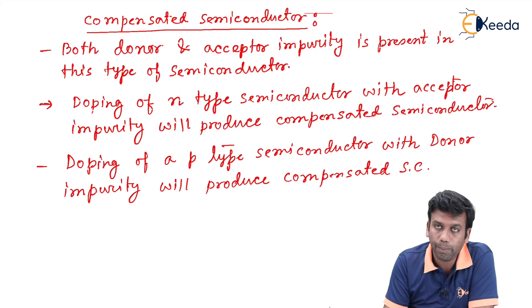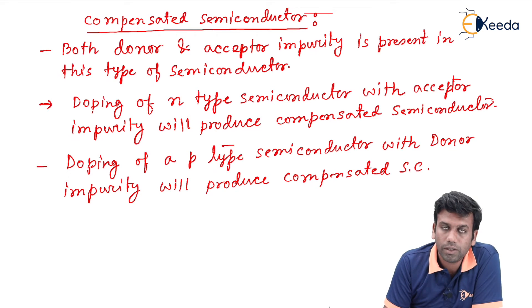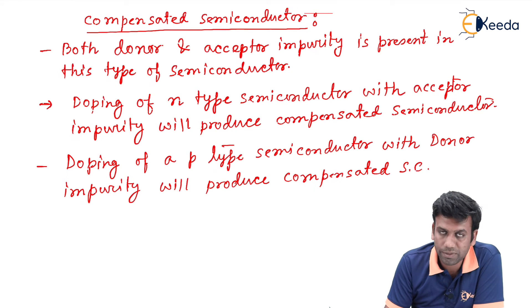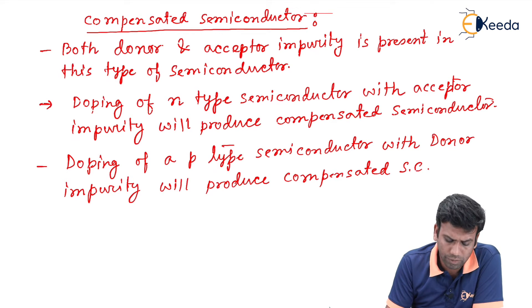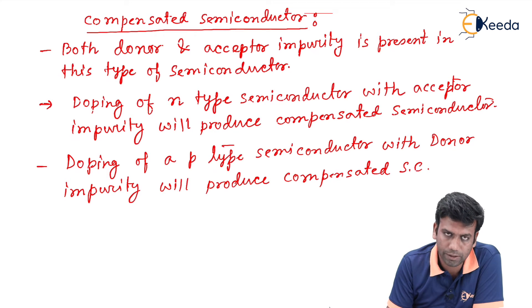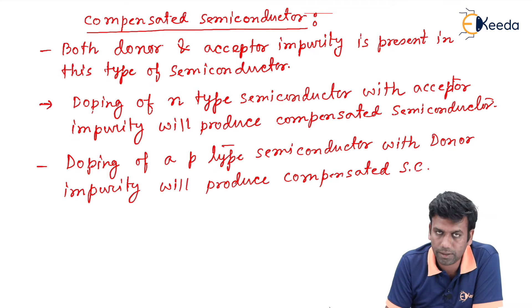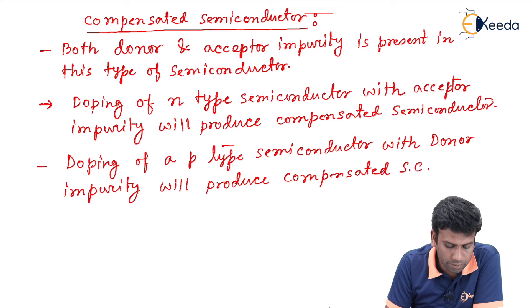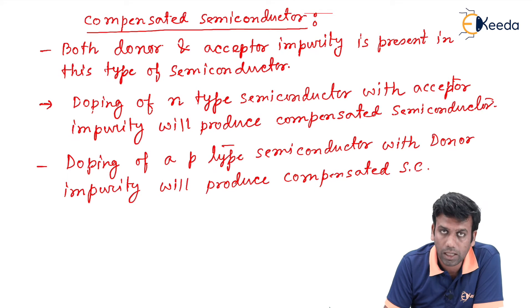So, a compensated semiconductor is a type of semiconductor in which we can get both donor impurity as well as acceptor impurity. Now, compensated semiconductors are of different types.